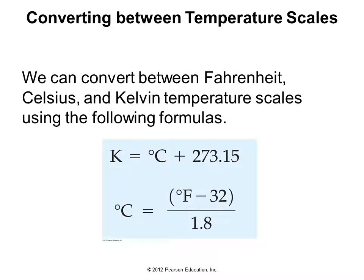Converting between temperature scales is straightforward. To get Kelvin, take the degrees Celsius and add 273.15. To convert Fahrenheit to Celsius, subtract 32 from the Fahrenheit value — so that freezing (32 − 32 = 0) aligns with 0°C — and then divide by 1.8.